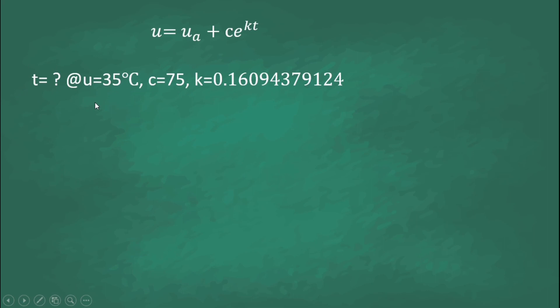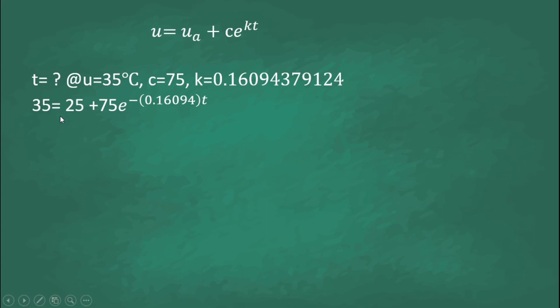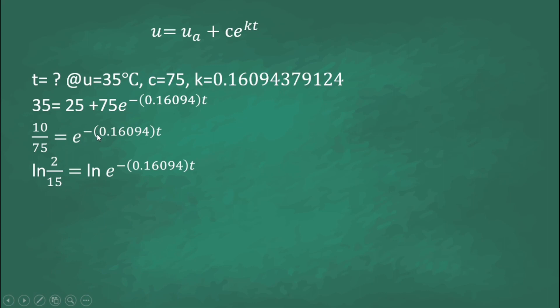Since we now have the values of C and k, we can find the time at which the temperature reaches 35 degrees Celsius. Using the equation u equals u sub a plus Ce raised to kt, and substituting the values: 35 equals 25 plus 75e raised to negative 0.16094t. Simplifying, 35 minus 25 gives us 10, so 10 over 75 equals e raised to negative 0.16094t. Taking the natural log of both sides, ln(2/15) equals ln(e raised to negative 0.16094t).